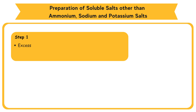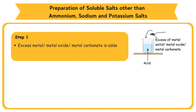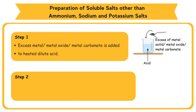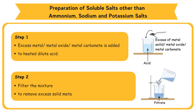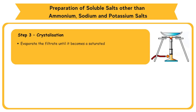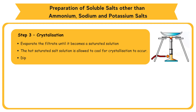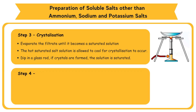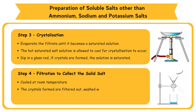Step 1 — Excess metal, metal oxide, or metal carbonate is added to heated dilute acid. Step 2 — Filtration: filter the mixture to remove excess unreacted solid — excess solid metal, metal oxide, or metal carbonate. Step 3 — Crystallization: evaporate the filtrate until it becomes a saturated solution. The hot saturated salt solution is allowed to cool for crystallization to occur. Dip in a glass rod — if crystals are formed, the solution is saturated. Step 4 — Filtration: the crystals formed are filtered out, washed with a little cold distilled water, and dried by pressing them between sheets of filter paper.